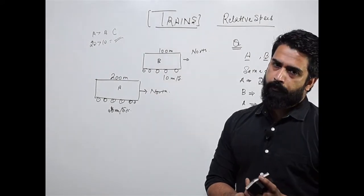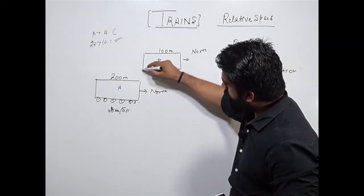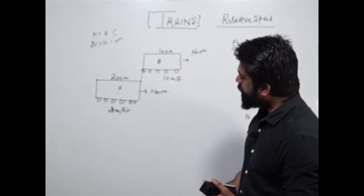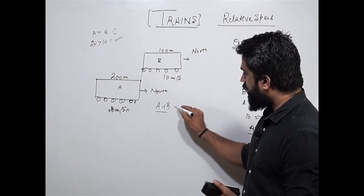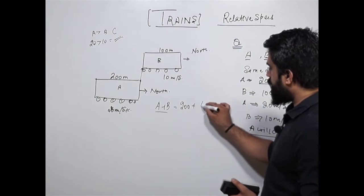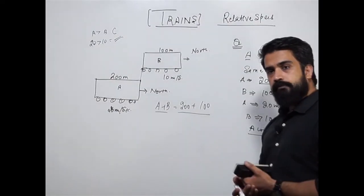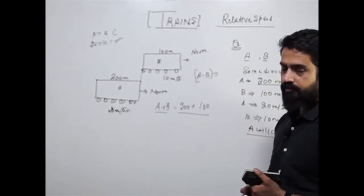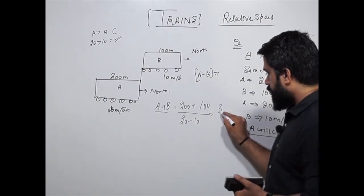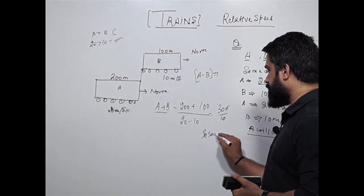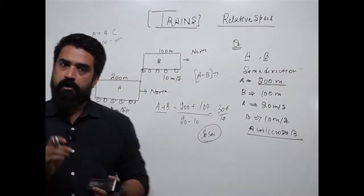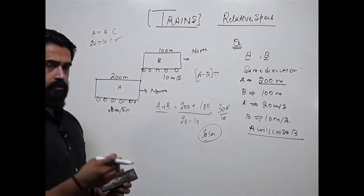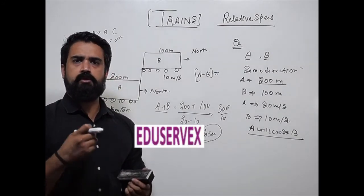When both trains cross, they cross from the same point. The distance covered by them is A plus B — A is 200 meters and B is 100 meters, so distance is 300 meters. They cross each other at relative speed, which is A minus B because they are moving in the same direction: 20 minus 10 equals 10. So 300 divided by 10 gives 30 seconds. Train A will cross Train B in 30 seconds. This is the first basic type of train problem.